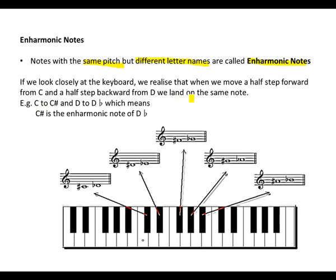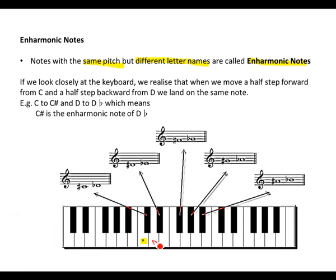If we look closely at the keyboard, we realize that when we move a half step forward from C, and a half step backward from D, we land on the same note. So if we move a half step up from C, we still land on the same note as moving a half step down from D. This means that C sharp is the enharmonic note of D flat, and vice versa. Thank you so much, enjoy your day.